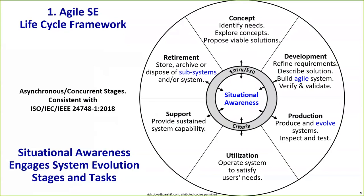Most notably, at the very center of the circle is situational awareness — a new stage that we are proposing should be incorporated in the next revision of 24748 and 15288. Situational awareness is the key stage in an agile environment because it is the trigger mechanism that starts up any and all other stages, whatever the situation requires — more development, more support, retirement, production, or whatever.